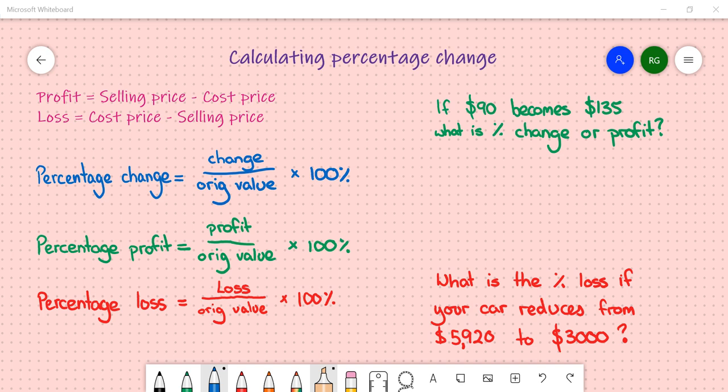A loss is when the cost price is subtracted from the selling price. So someone makes a loss there. For example, if you buy something and then sell it for a lower price, you work out how much money you've lost, like if you sell something second hand.